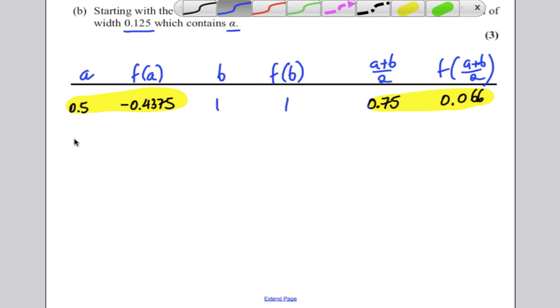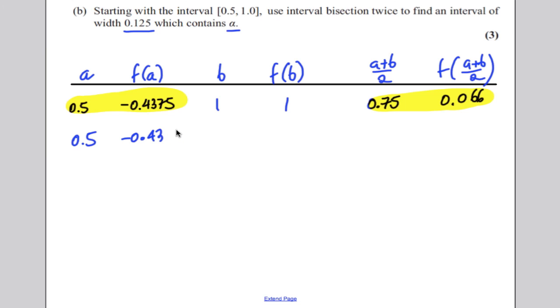So your new a, well, it's still 0.5, and your f of a is negative 0.4375, but your new b now is going to be 0.75, and f of b you know is 0.066. Now the next thing you want to work out, you want to work out a plus b over 2, 0.5 plus 0.75 all over 2, and you get 0.625.